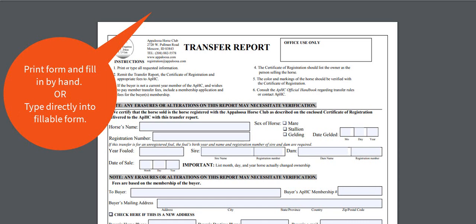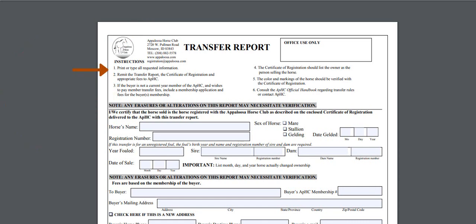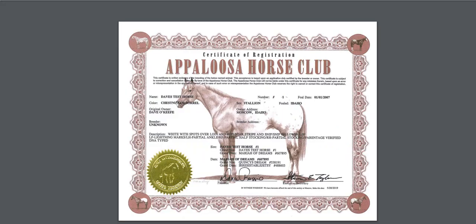At the top of the form on the left-hand side you will find our mailing address and some basic directions on how to complete the transfer. Below that you will list your horse's registered name and number as it appears on their certificate of registration. This is an example of your horse's registration certificate. You will find the registered name here and the registration number here.